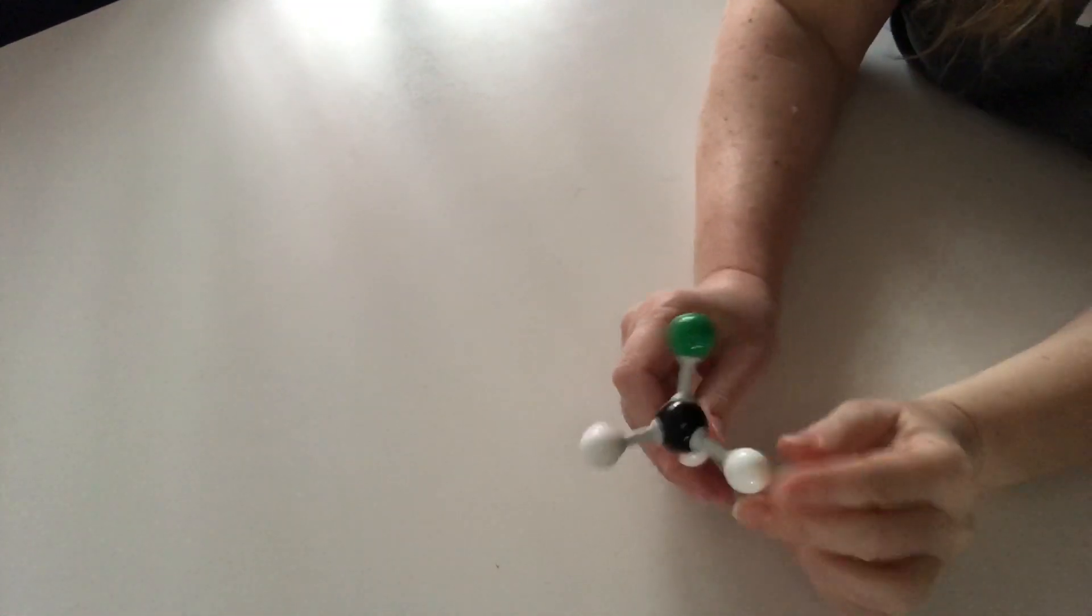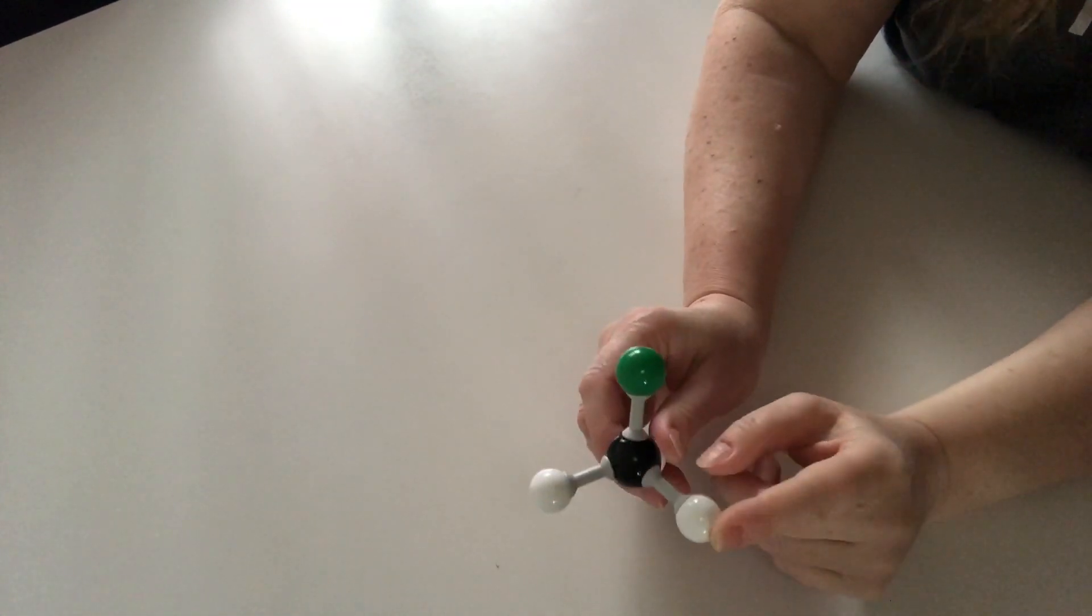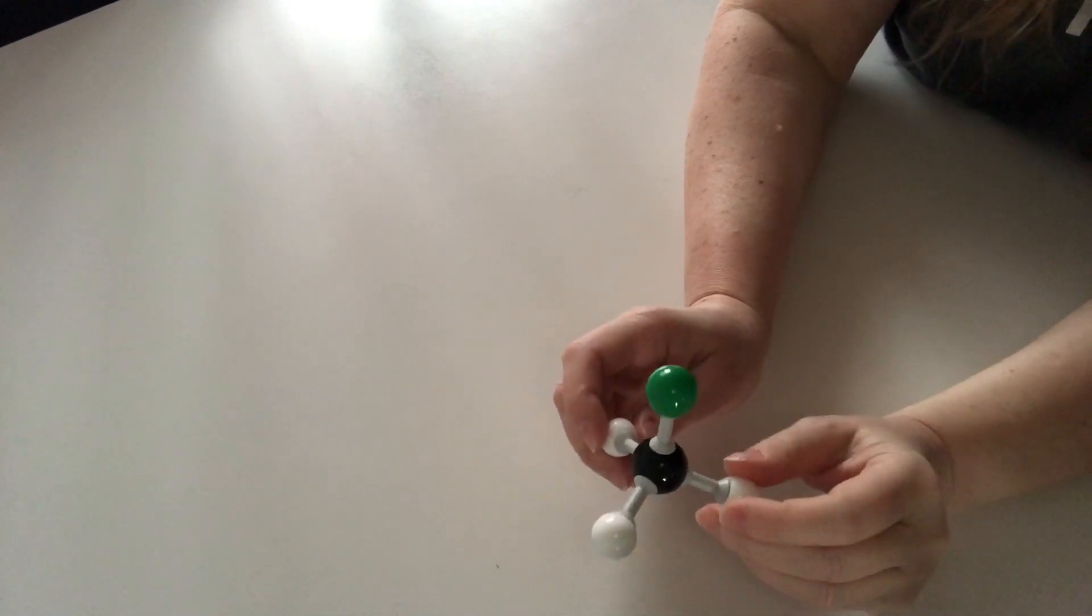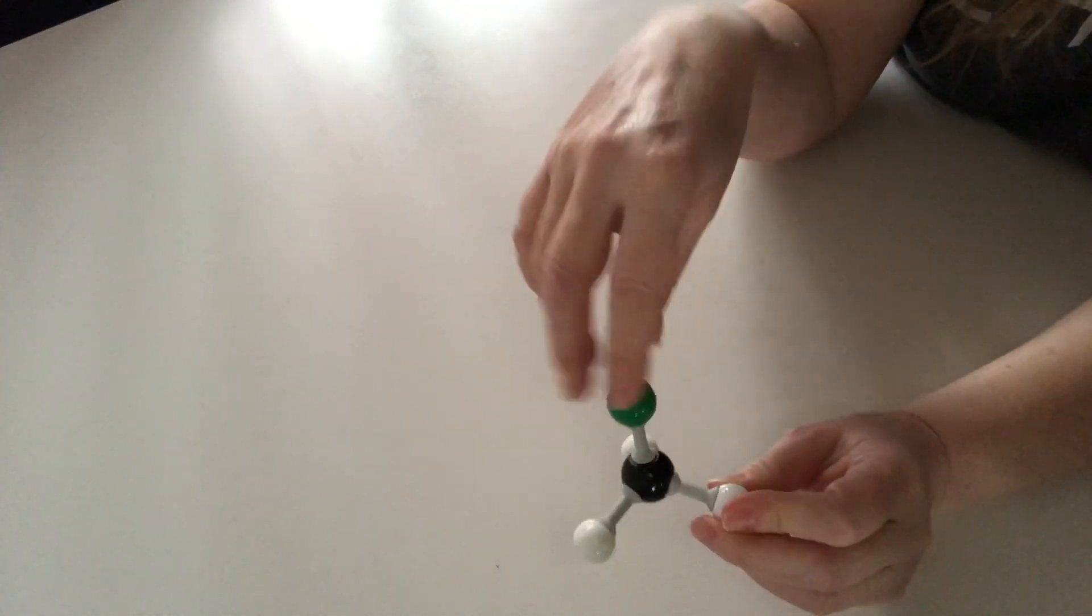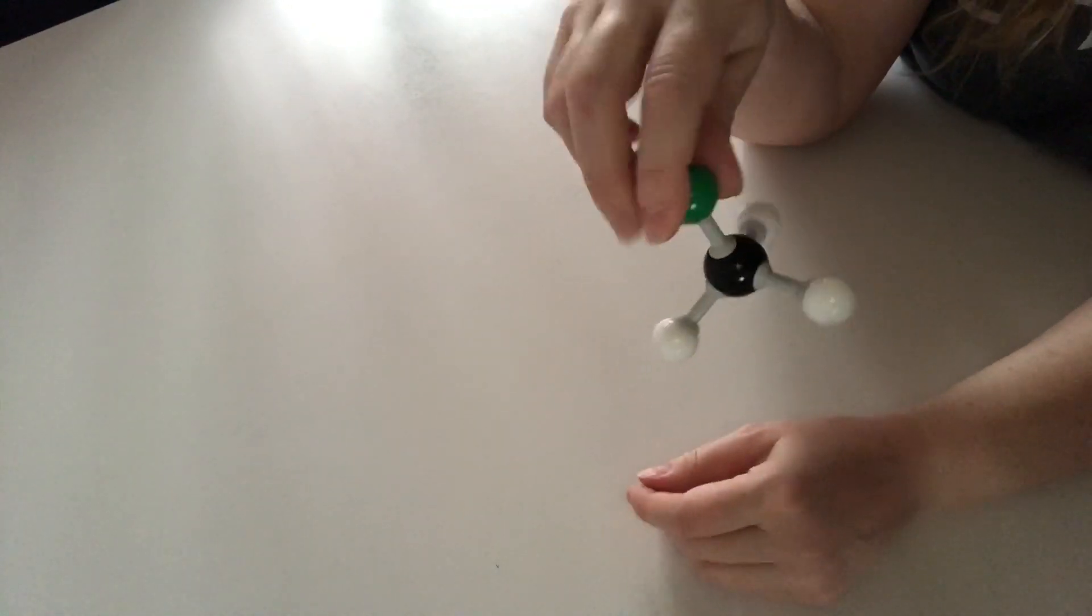All right, how about the CH3Cl problem I gave you? So, of course, it has E because everything has E. It also has C1 because everything has C1. But what else does it have?